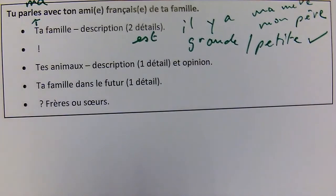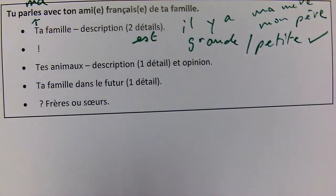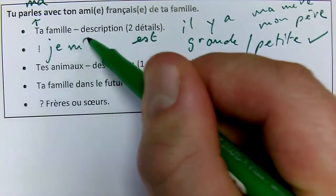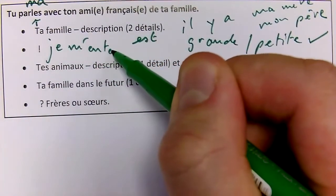Next, you have the unseen question. What do you think I might ask you? It's still going to be on the topic of family. Looking at the other bullet points — things that aren't mentioned — it already mentions pets and family in the future and brothers or sisters. Maybe it might be something to do with parents or friends: do you like them or do you get on with them? How would you say 'I get on with'? You could say 'je m'entends bien' — one of those reflexive verbs.